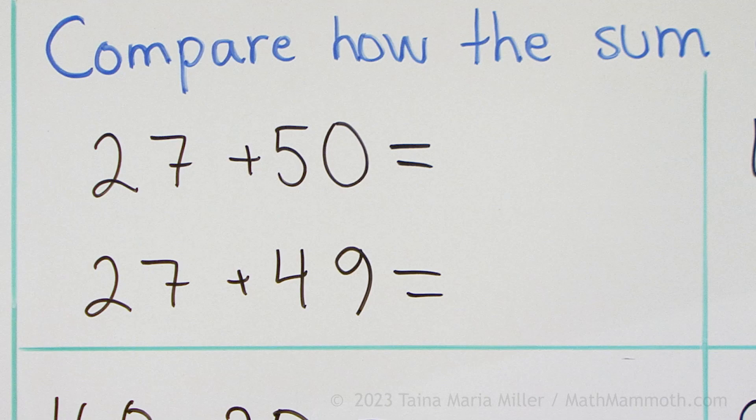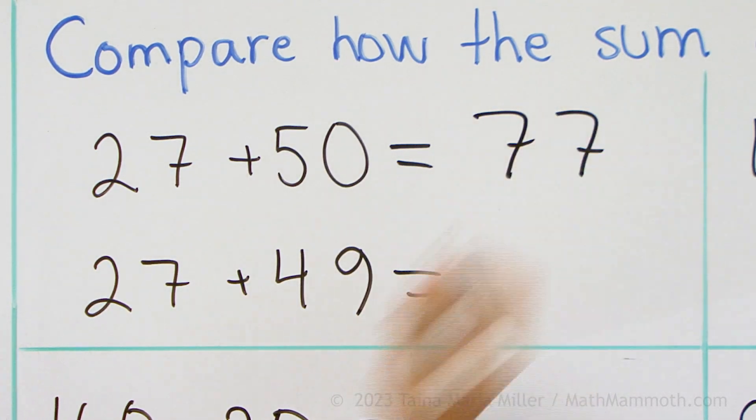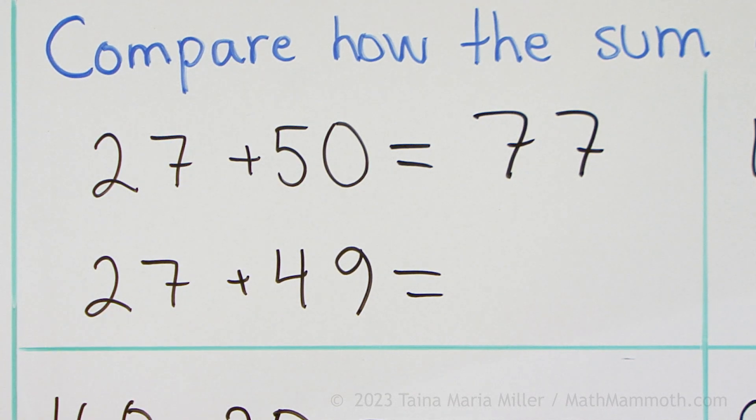27 plus 50, okay here I add 50 and 20 and then the 7, that's 77. And now 27 plus 49. Notice what is different over here.